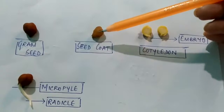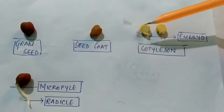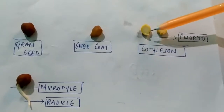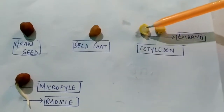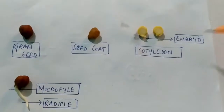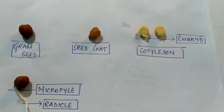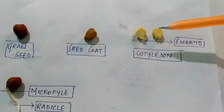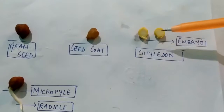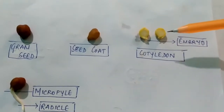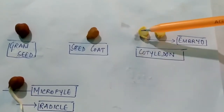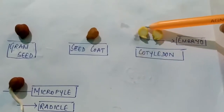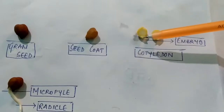Within the testa and tegmen, we get the cotyledons — the two seed leaves present over here. And inside the seed leaves, we can find the entire endosperm present. Since there are two cotyledons present, gram is an example of a dicot seed. And since endosperm is present, it is also an example of a dicot endospermic seed.